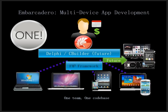Think of Embarcadero now as the multi-device application development solution. With one development team and one code base, you can create an application once and compile it to run on Windows, Mac, and iOS from the same code base with no extra development effort. Android for Delphi and C++ Builder is planned later this year. This framework can reduce your lines of code by up to 80%, delivering faster time to market for Windows, Mac, iOS, and Android at a much lower cost.